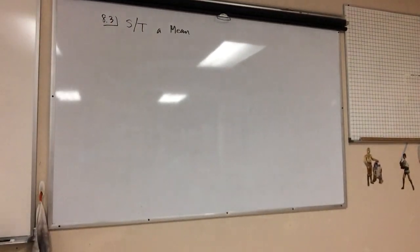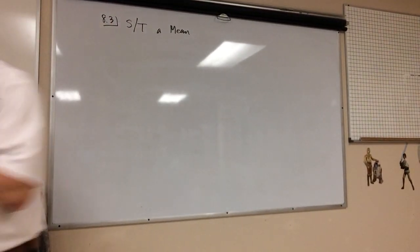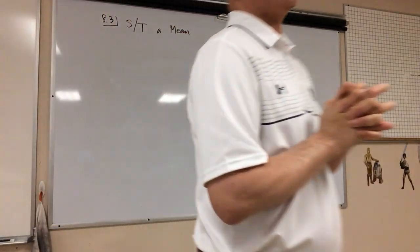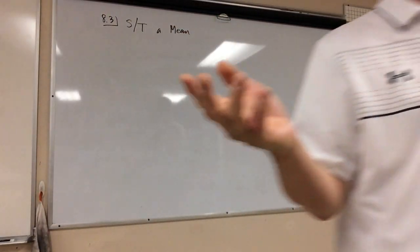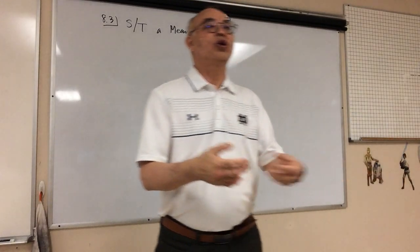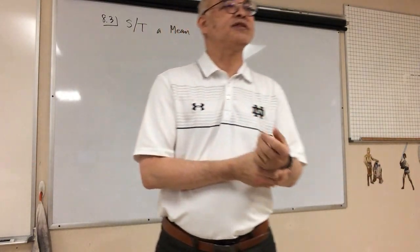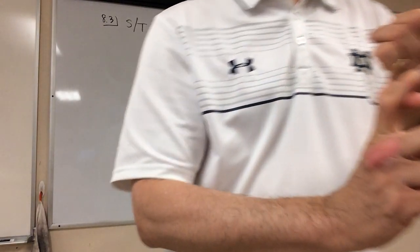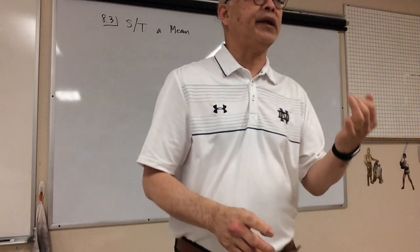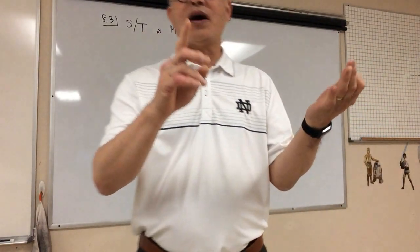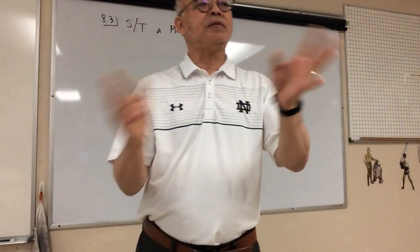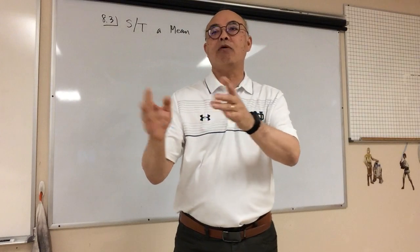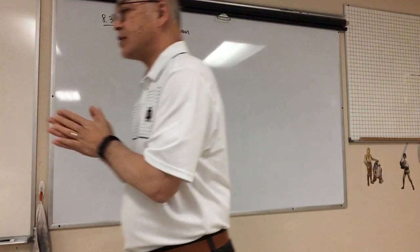Today we're going to start on 8.3. On 8.1 we learned how to do a significance test. We talked about what the p-value was, why we calculated it, and then we compared it with the alpha to either reject the null hypothesis or fail to reject the null hypothesis, and we talked about the mechanics of how significance testing works.